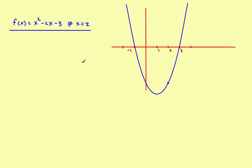In this video we're going to take a look at how to find the equation of the tangent line and the normal line to a function at a given point. Our function in this case will be a fairly easy example. We use x squared minus 2x minus 3, and we want to find the equation of the tangent line and the normal line at the point x equals 2.